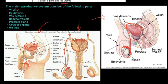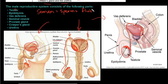The vas deferens is also known as the sperm duct, but preferably use the term vas deferens. Next is the seminal vesicle, which is part of the accessory glands. These glands secrete fluids that make up semen — semen equals sperm plus the fluids of the accessory glands. The seminal vesicle secretes a yellowish sticky substance containing fructose, a type of sugar, which provides nutrition for the sperm.